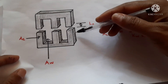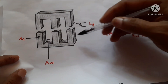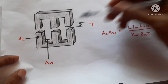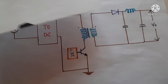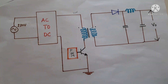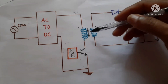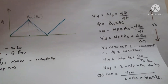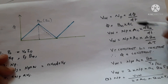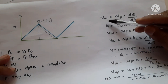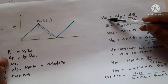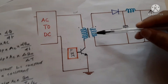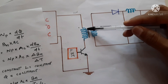In the datasheet of the core, the area of the core (Ac) will be mentioned. If we know the area of the core, we can calculate the number of turns we have to wind. This is given by Faraday's equation: voltage equals N times dφ/dt, where N is the number of primary turns.